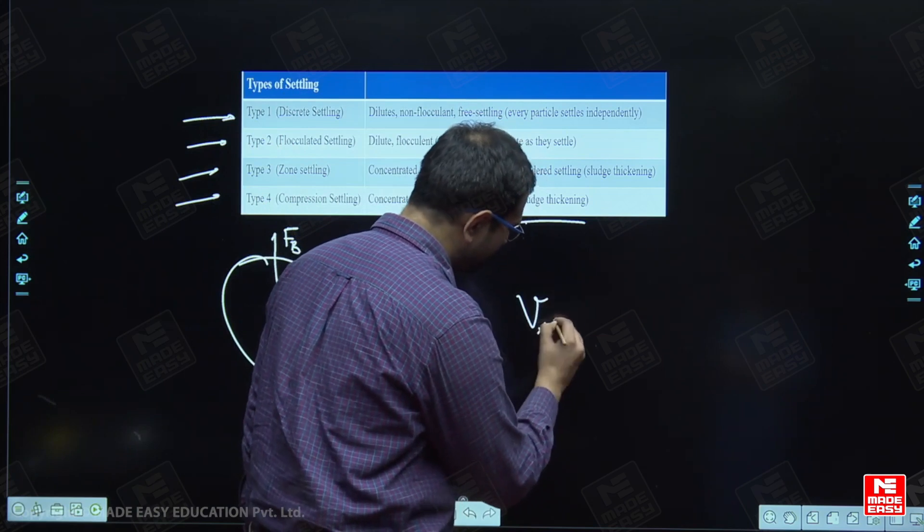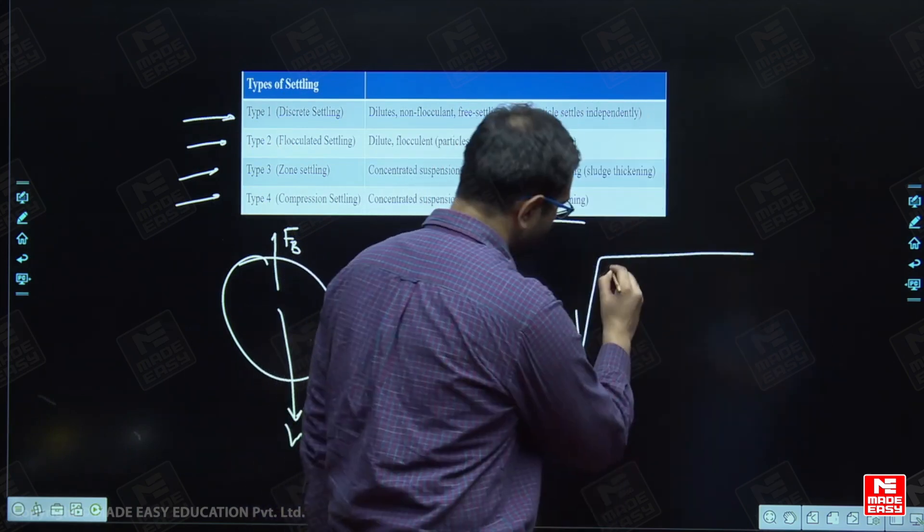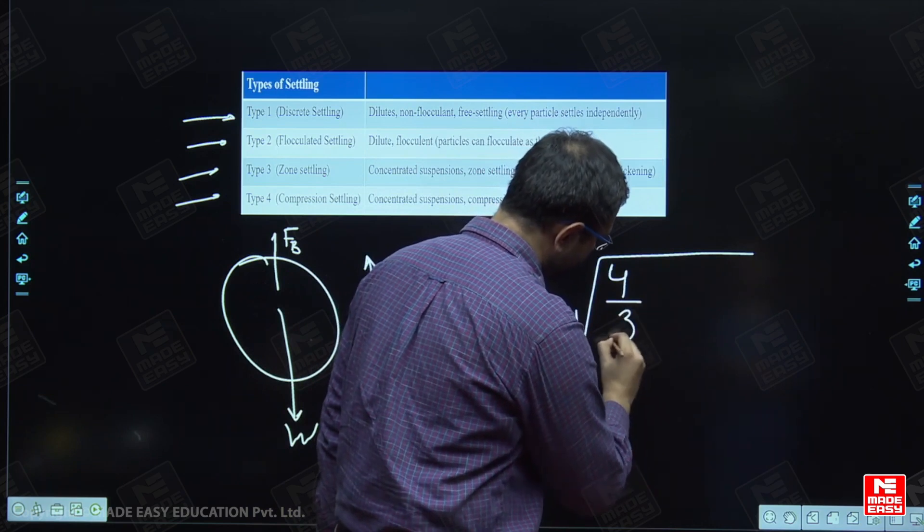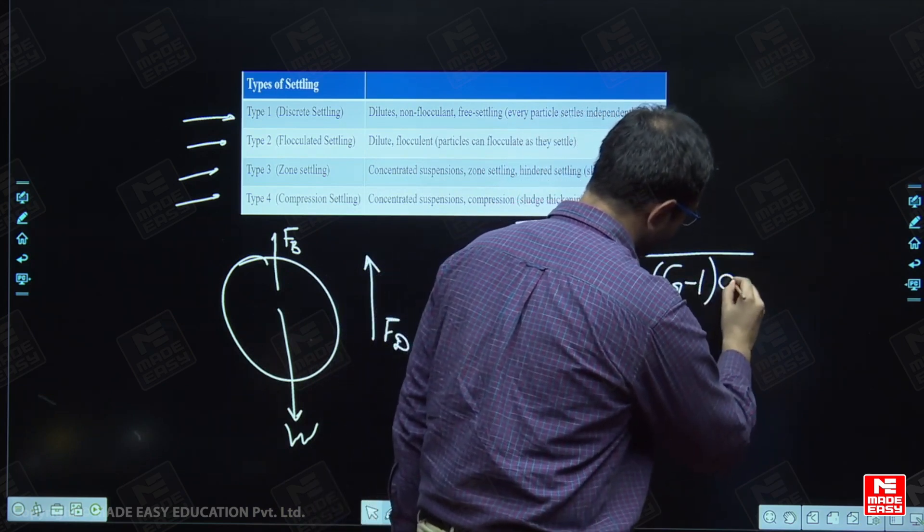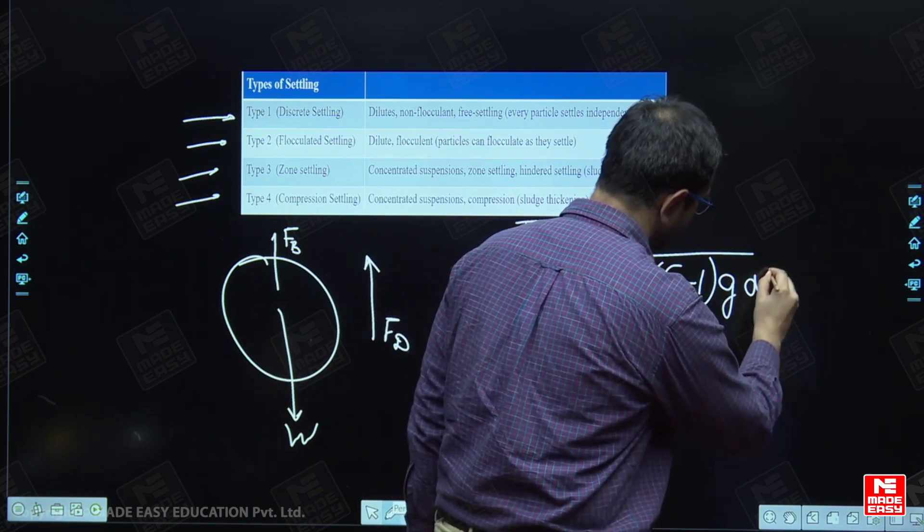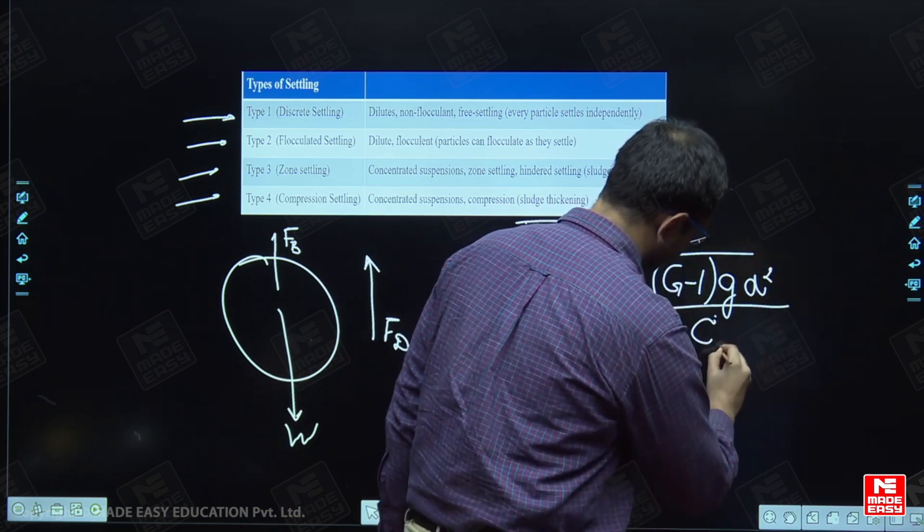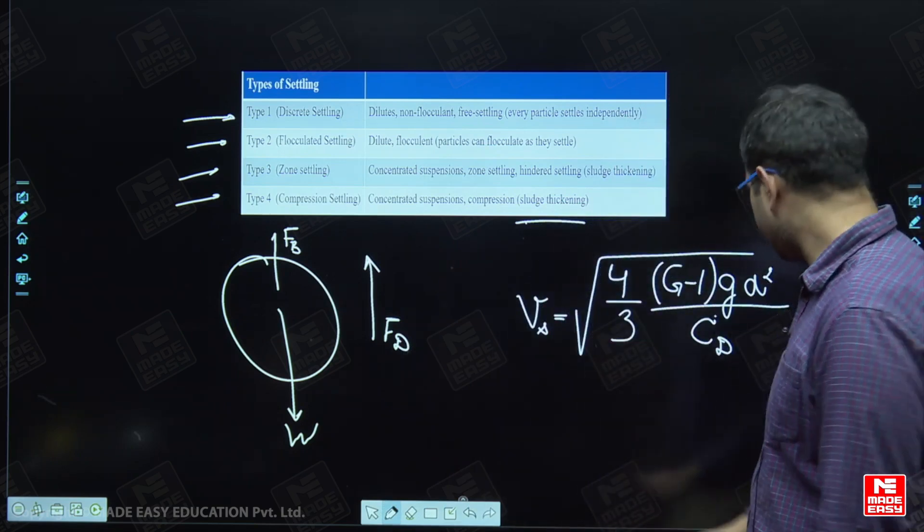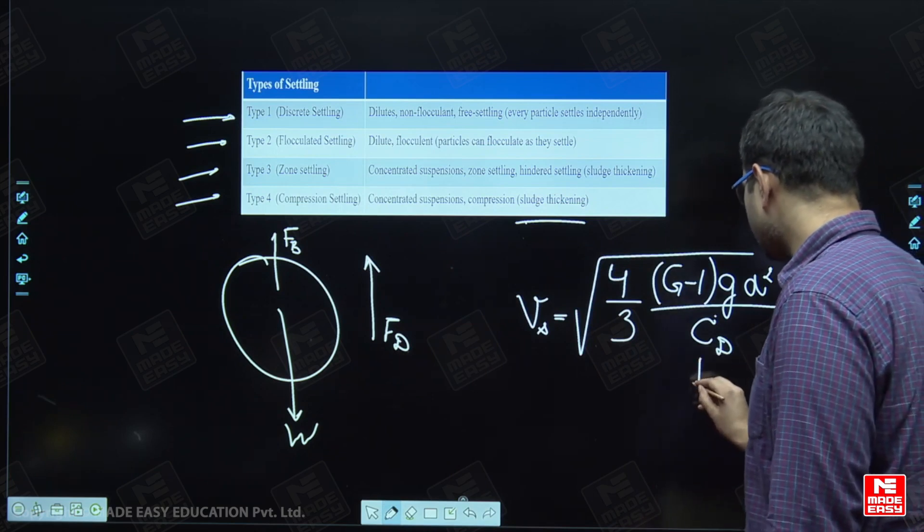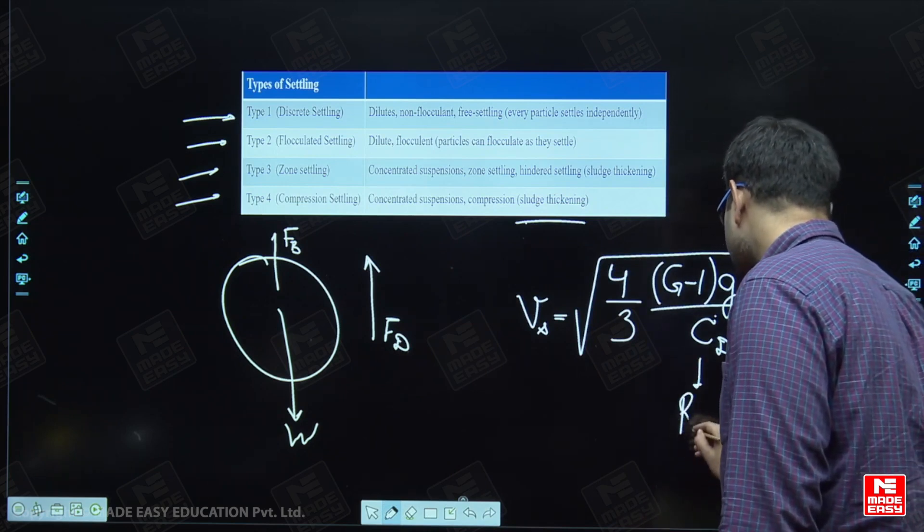and this terminal velocity is derived as 4 by 3 g minus 1 g d square upon coefficient of drag. This equation is used to find the terminal settling velocity. And this c d, coefficient of drag, depends on the Reynolds number.